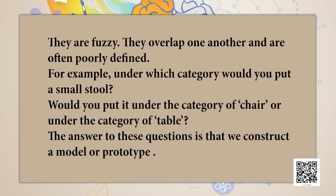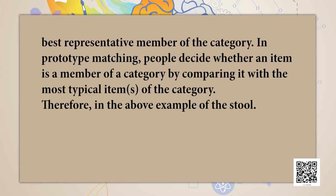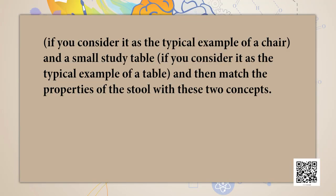Most of the concepts people use in thinking are neither clear nor unambiguous — they are fuzzy, overlapping, and often poorly defined. For example, under which category would you put a small stool — chair or table? The answer is that we construct a model or prototype. A prototype is the best representative member of the category. In prototype matching, people decide whether an item is a member of a category by comparing it with the most typical item. So for the stool, you would compare it with a standard study chair or a small study table.